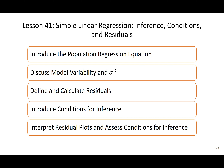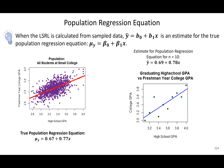First, we'll talk about the population line. The least squares regression line has a y-hat — anytime you see a hat, know that it's estimated using sample data. The equation of this line, y-hat, is estimated as b0 (our estimate for the y-intercept) plus b1 (our estimate for the slope) times the explanatory variable. That is our estimated line equation for some population equation.